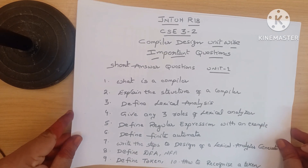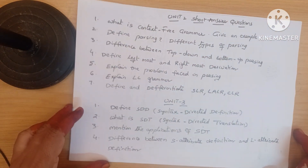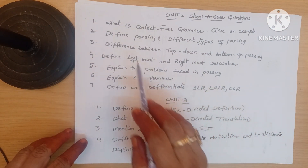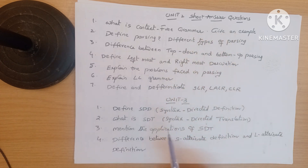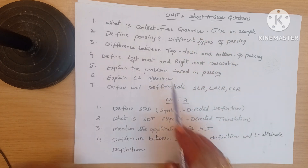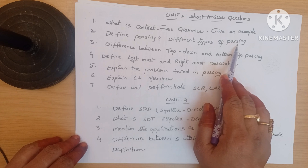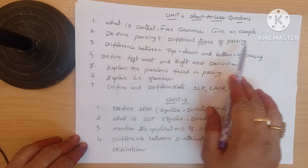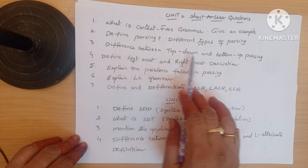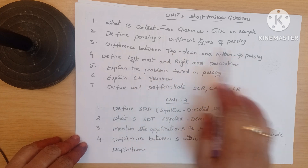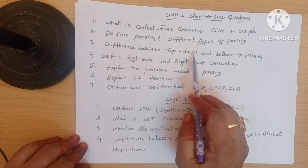Now Unit 2 short answer questions. What is context-free grammar — give an example, important question. Next: define parsing and explain the different types of parsing. Next: difference between top-down and bottom-up parsing. The second and third questions are almost the same because explaining different types of parsing means explaining top-down and bottom-up.